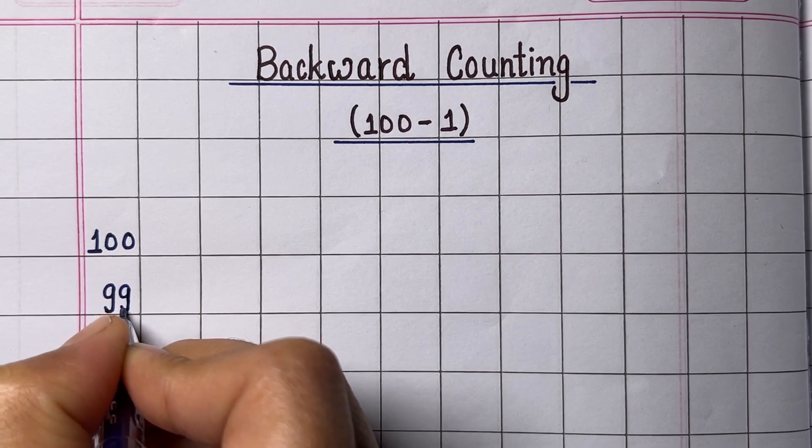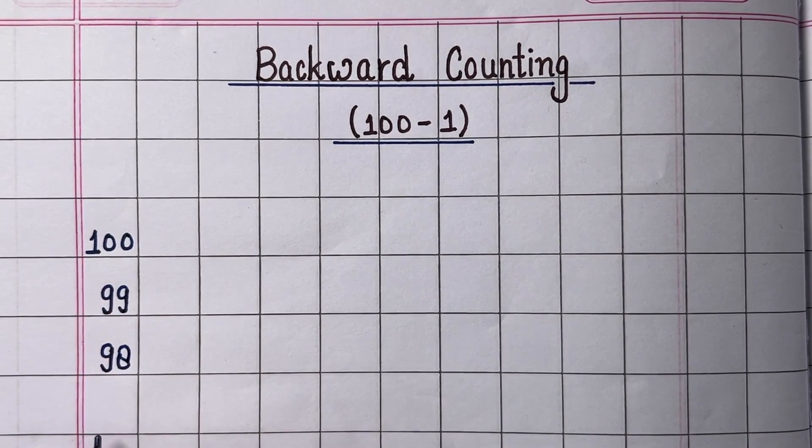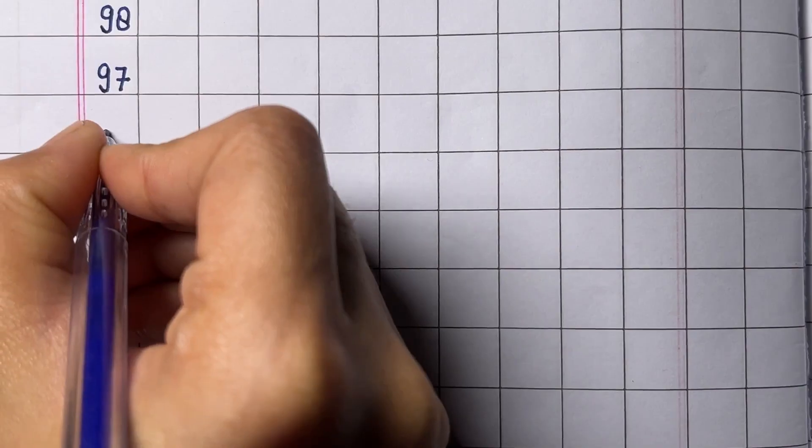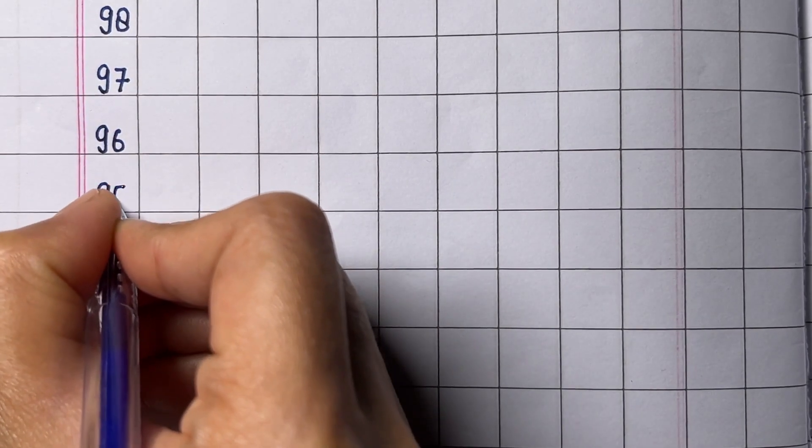What is backward counting? Backward counting is the process of counting by eliminating one at a time. In backward counting, we reduce one digit. For example, let's see.